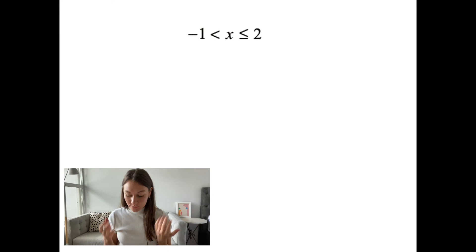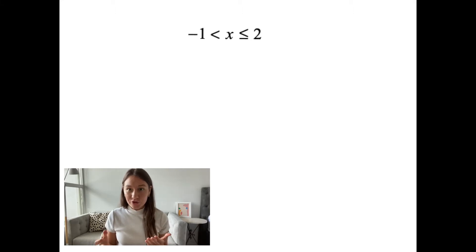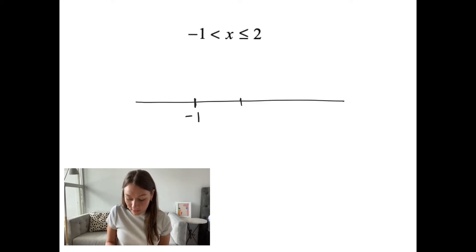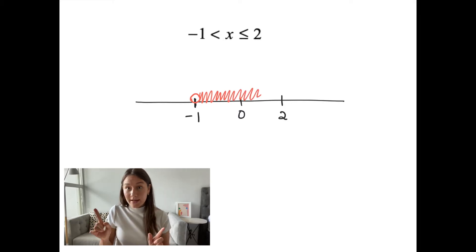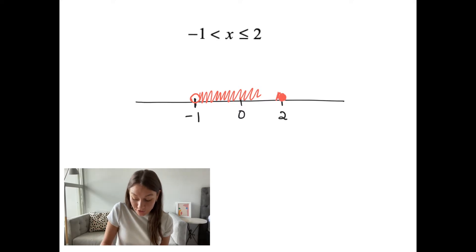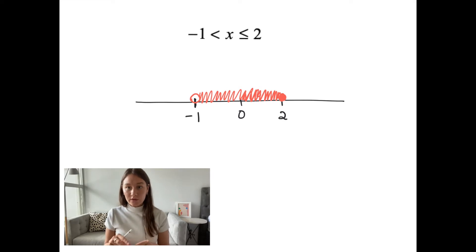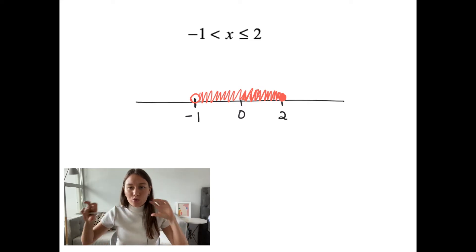A lot of the time on the SAT, they'll test inequalities by giving you two inequalities in one line. So you'd read something like negative 1 is less than X, and X is also simultaneously less than or equal to 2. I always recommend drawing that number line to visualize the range. We have an open circle at negative 1 because it doesn't include negative 1, and X can be greater than negative 1. X also has to be less than or equal to 2, so it could equal 2 or be less than 2. Your goal is to get X by itself with two endpoints so you can see X is in between those two numbers.